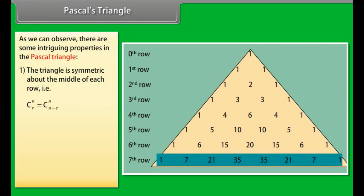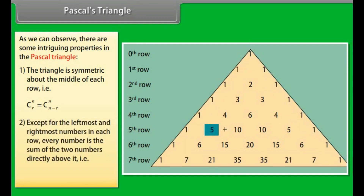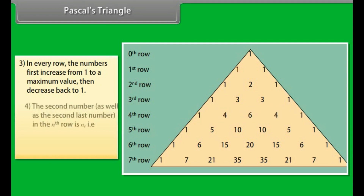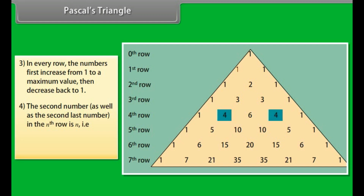That is, nCr = nC(n−r). Except for the leftmost and rightmost numbers in each row, every number is the sum of the two numbers directly above it — that is, nCr = (n−1)C(r−1) + (n−1)Cr. In every row, the numbers first increase from 1 to a maximum value, then decrease back to 1. The second and second-last number in the nth row is n — that is, nC1 = nC(n−1) = n.